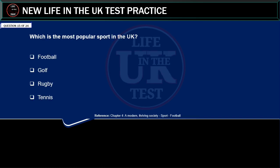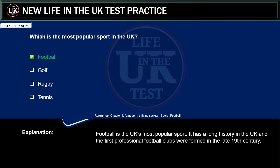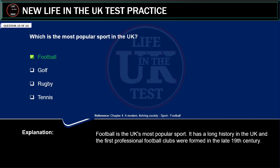Which is the most popular sport in the UK? Football. Golf. Rugby. Tennis. Correct answer: football. Explanation: football is the UK's most popular sport. It has a long history in the UK and the first professional football clubs were formed in the late 19th century.